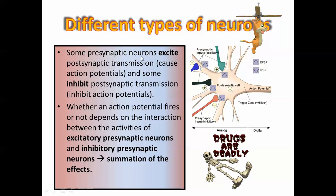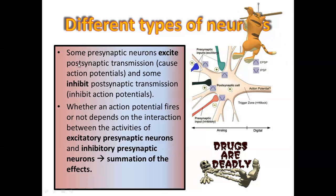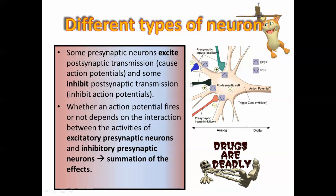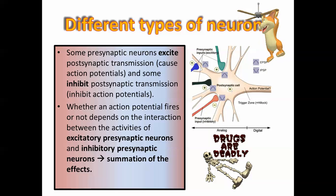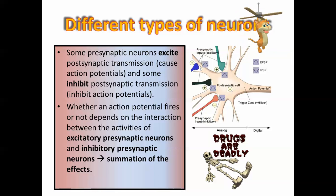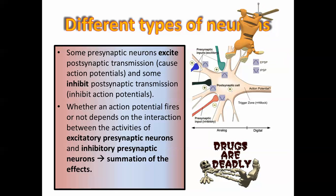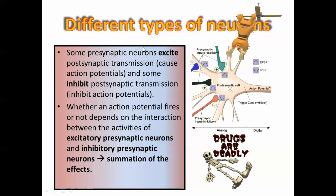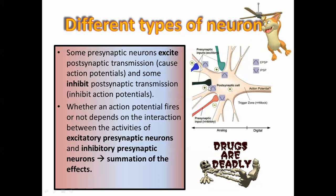Some of these presynaptic neurons will excite postsynaptic transmission. You need to understand a bit about neuron firing and what happens at the synapse between neurons before you fully understand this. Across the synapse — which is the gap between the axon terminal and the dendrite of another neuron — some of those neurons can cause excitation, which basically says fire, and then some will say don't fire.